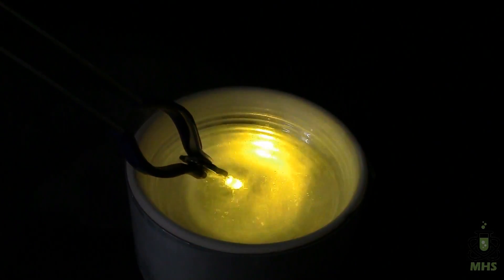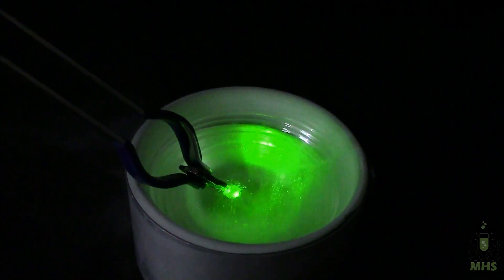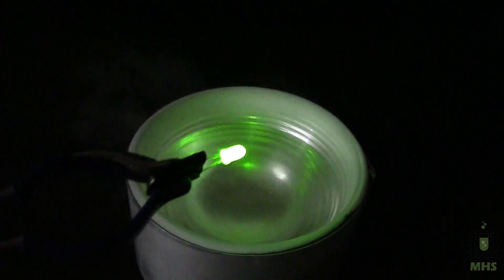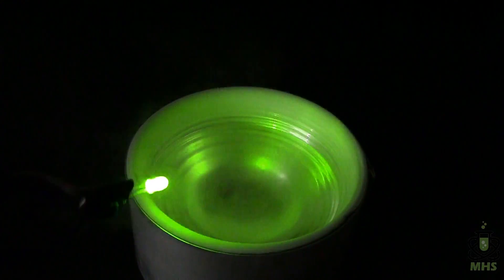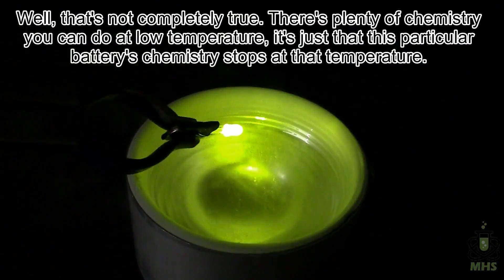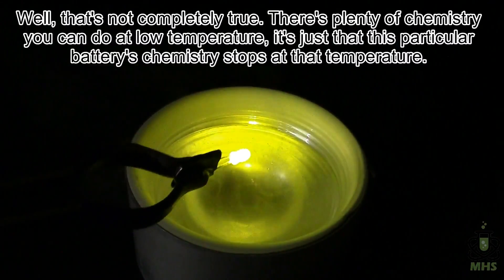Something else you might notice is I'm careful about how I dip this, because I don't want to dip the battery in the nitrogen. Because batteries work off of chemistry, and chemistry basically stops at liquid nitrogen temperatures. So if you put the whole thing in there, it just shuts off because the battery just stops working.